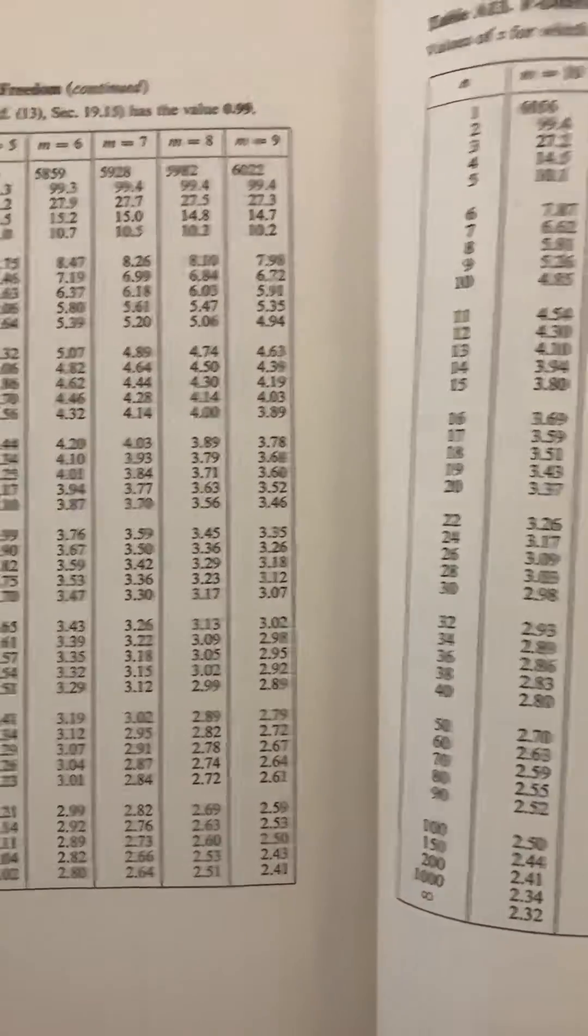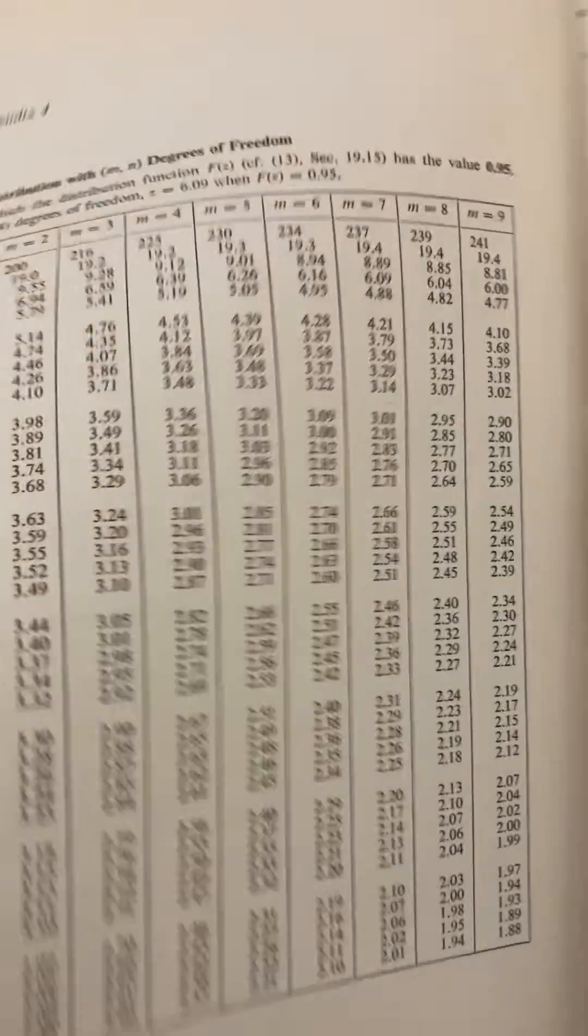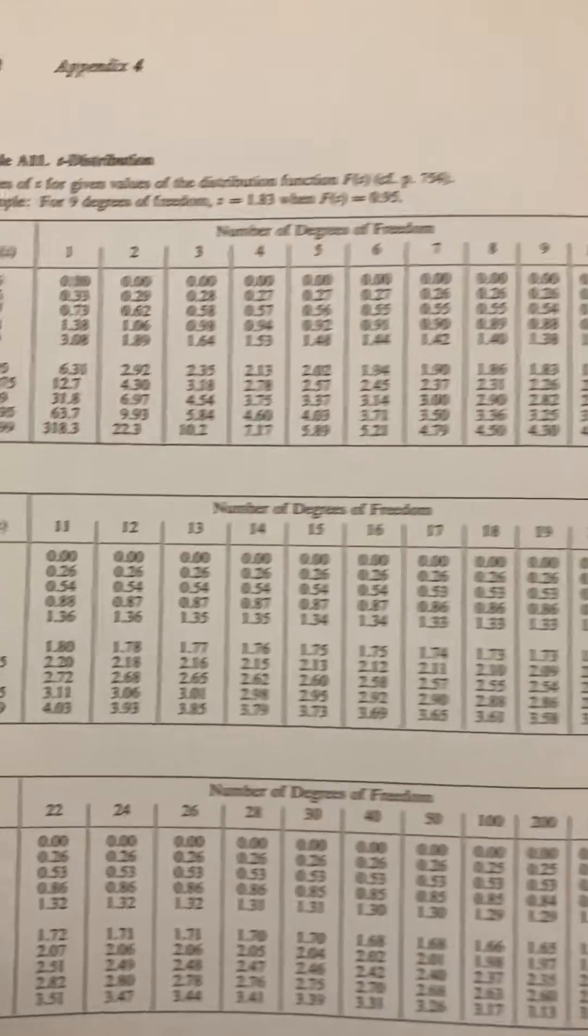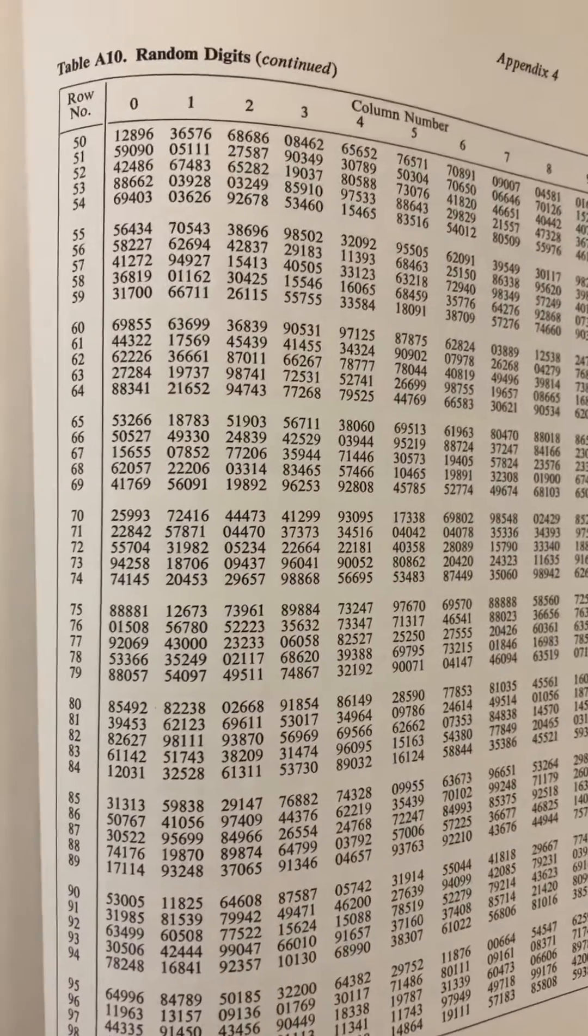Of freedom. What does that even mean, degrees of freedom? F distribution, chi-square distribution, bro. Random digits, straight up just random digits.